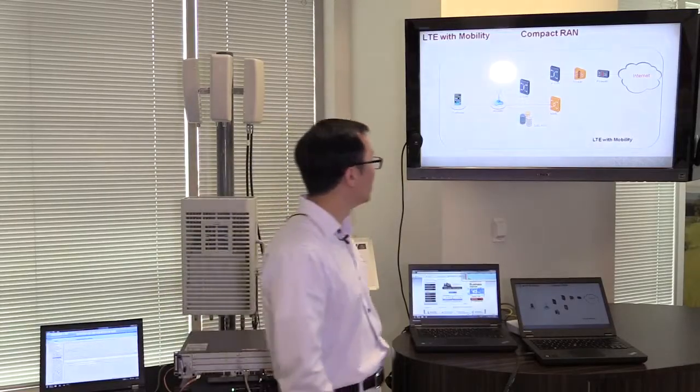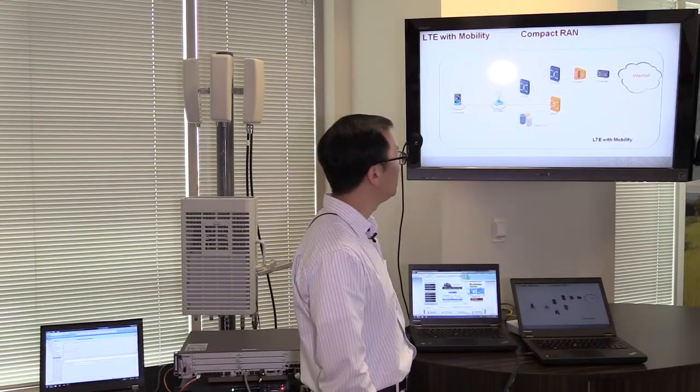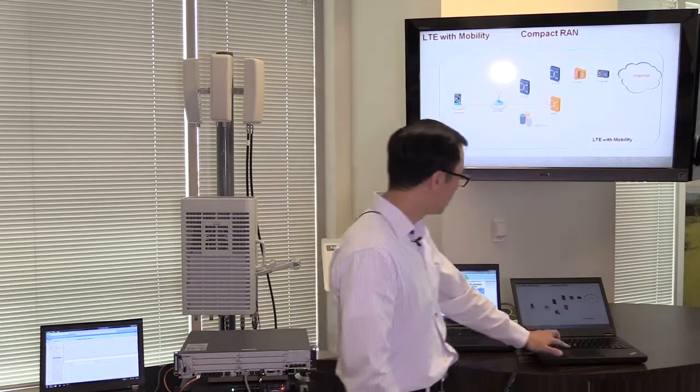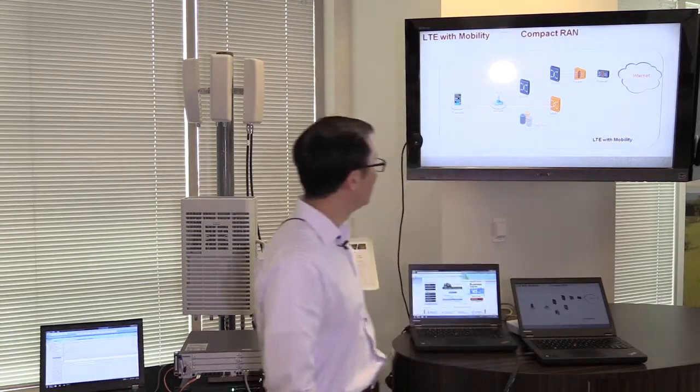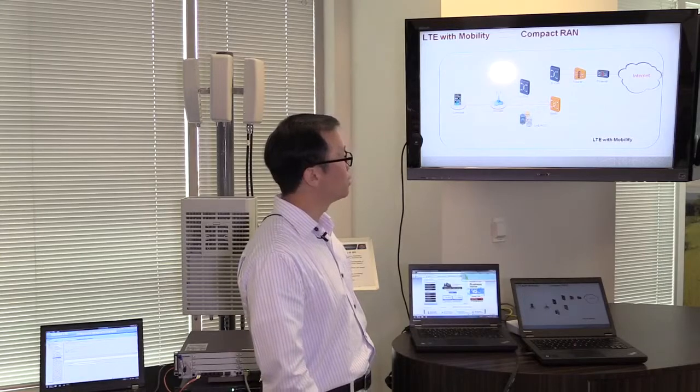Let's look at this conceptual diagram. First of all, the Compact RAN is an LTE base station, or the standard name for that is LTE eNodeB. This is the LTE eNodeB, and this is actually a standard LTE network.